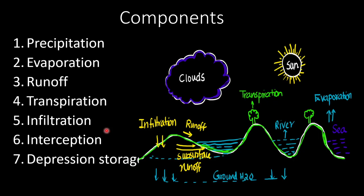Moving on to the components of a hydrologic cycle, there are seven main components: precipitation, evaporation, runoff, transpiration, infiltration, interception, and depression storage. We will see one by one what all these components are about.